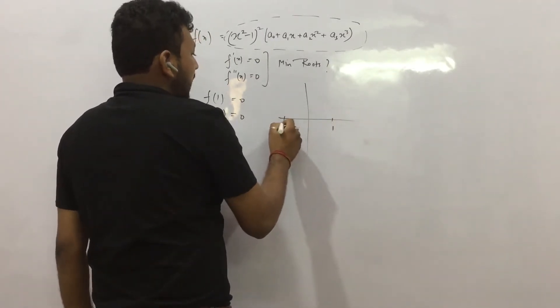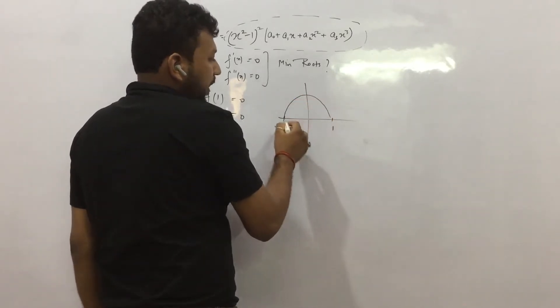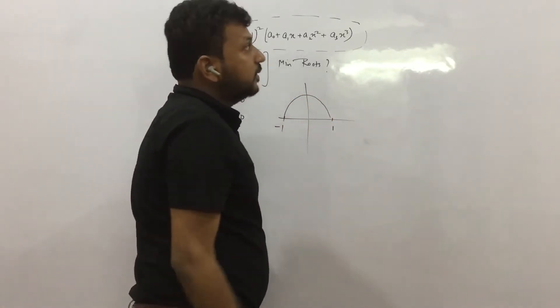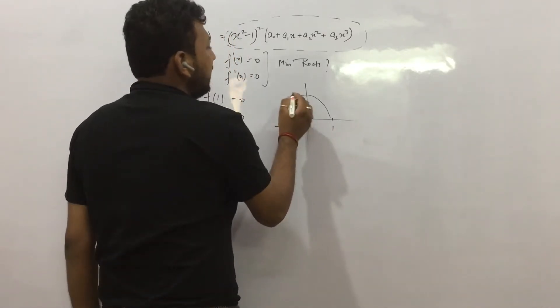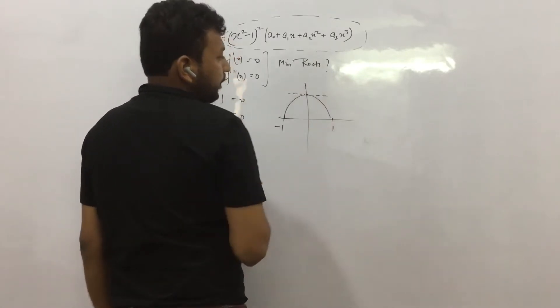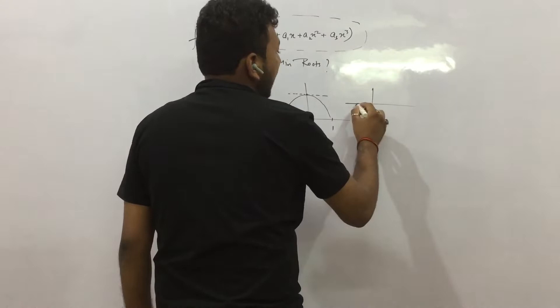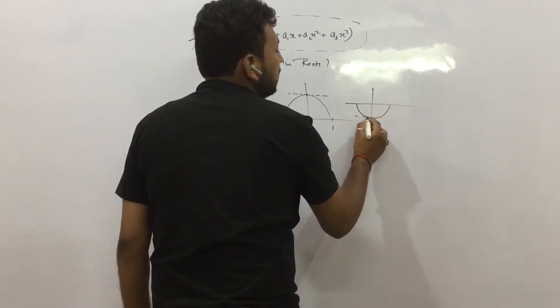f(1) is 0, f(-1) is 0. The function might have gone like this or maybe from the bottom side. Since it is differentiable and continuous, so at least at one location somewhere its slope must be 0.